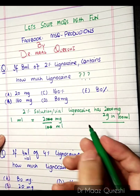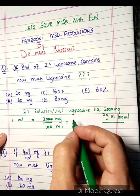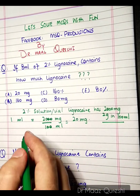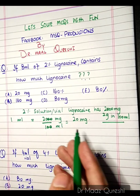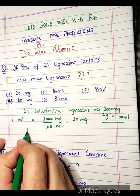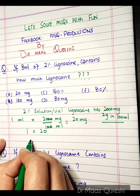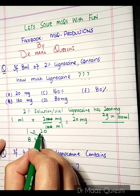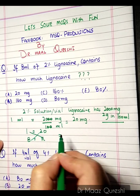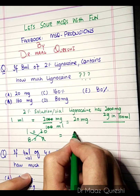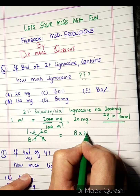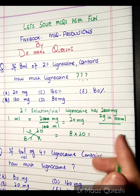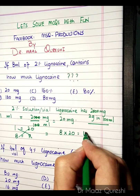So: 2,000mg in 100ml — the answer for 1ml is 20mg. Now the rest is easy. If 1ml contains 20mg, then 8ml would contain x. Cross multiplication: 8 times 20 — 2 times 8 is 16, just add a zero. So the answer is 160mg.